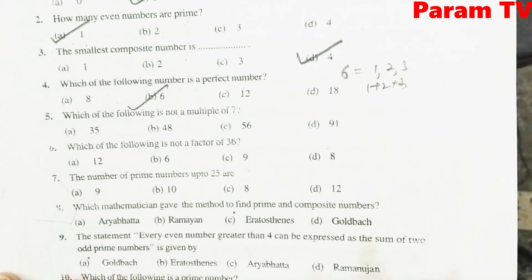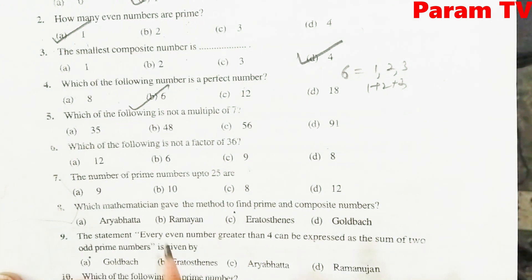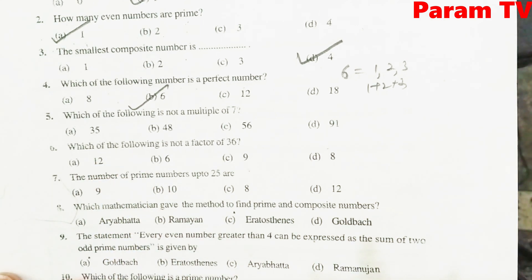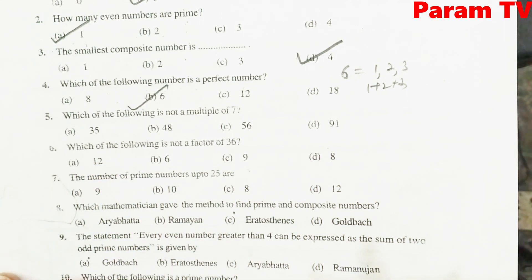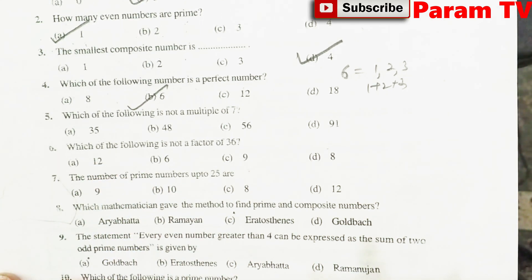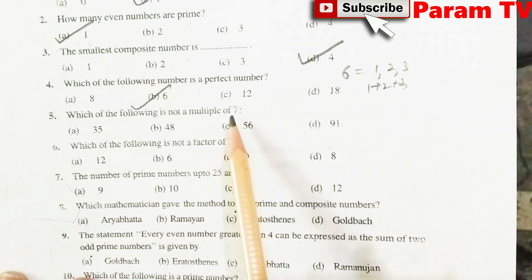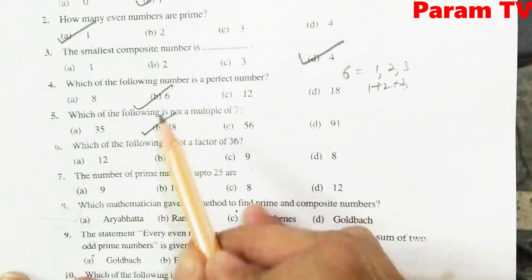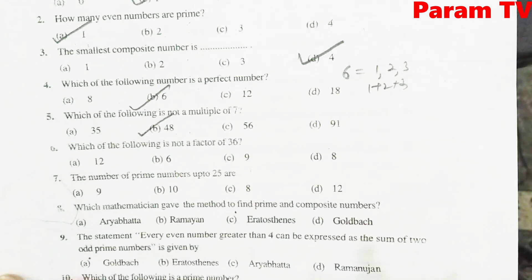Which of the following is not a multiple of 7? 7 का multiple इनमें से कौन सा नहीं है? देखिए, options में 35 है — yes, वो table में है. 48 आता है 7 के table में? 7 का table देख लीजिए, उसमें 48 नहीं दिखता. B is the right option.